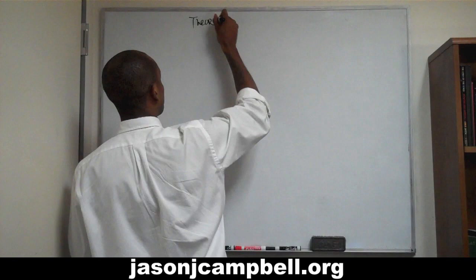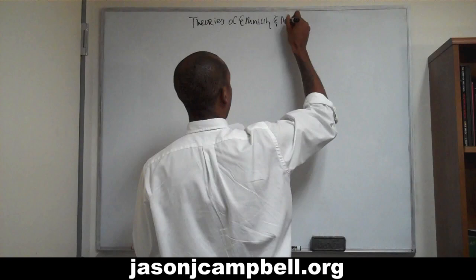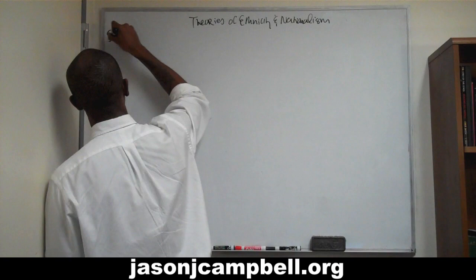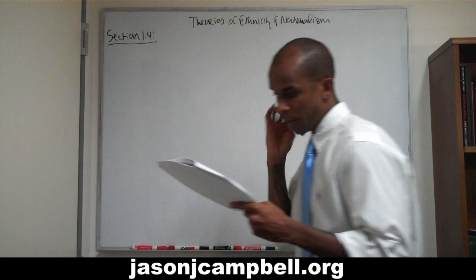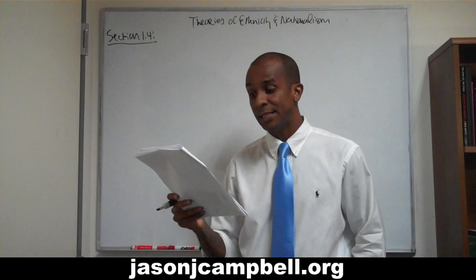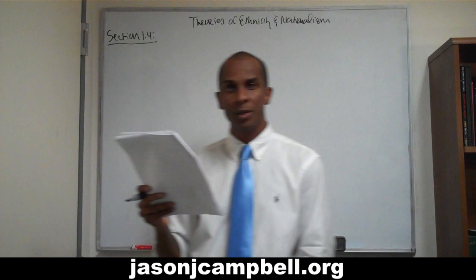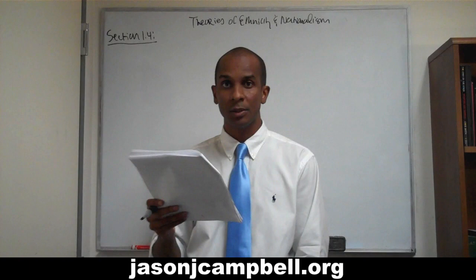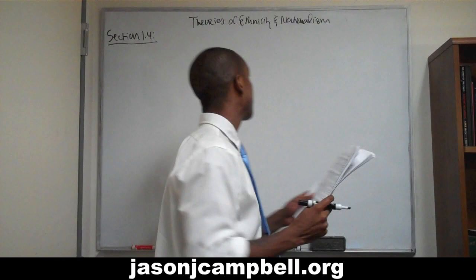So this is Theories, Section 1.4. The same book — American Ethnicity: The Dynamics and Consequences of Discrimination — and we're going to talk today about the four stages of assimilation. The vast majority of this section is on the concept of assimilation, and we're going to be looking at Robert Park's four stages of assimilation.